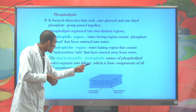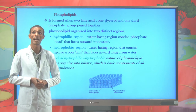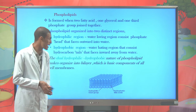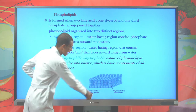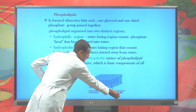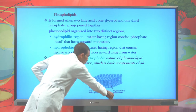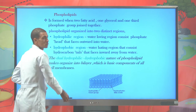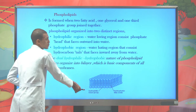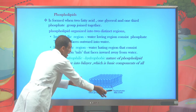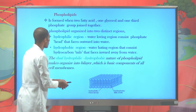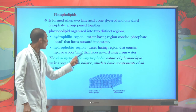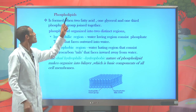The hydrophobic hydrocarbon tail faces inward away from water, while the hydrophilic phosphate head faces outward into the water. This dual hydrophilic-hydrophobic nature of phospholipid is very important in making membranes arranged in a bilayer. The hydrophilic phosphate heads point outward into the water, while the hydrophobic hydrocarbon tails point inward. Phospholipid is therefore the key component responsible for membrane bilayer formation.